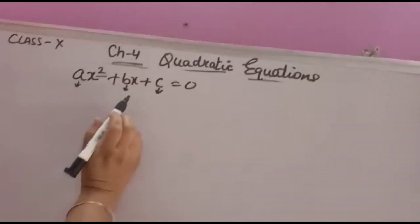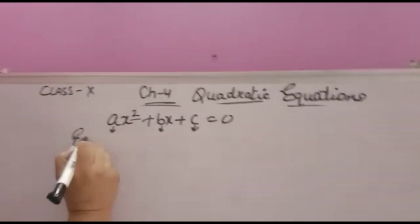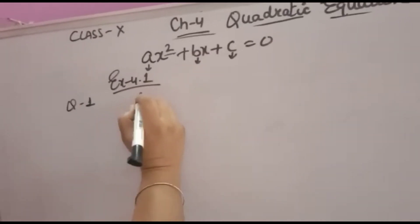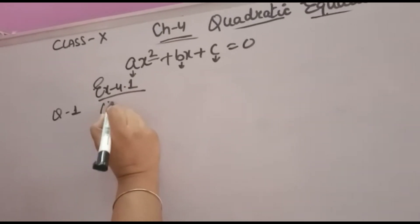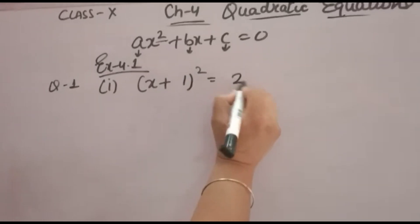The highest power of x should be 2, then we can say the equation is Quadratic Equation, otherwise not. See Exercise 4.1, question first. Check whether the following are Quadratic Equations. First part, you have to check whether it is a Quadratic Equation or not.